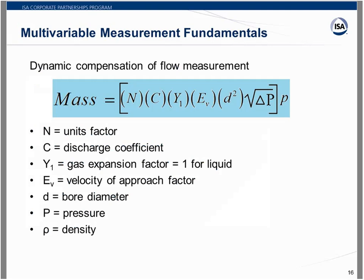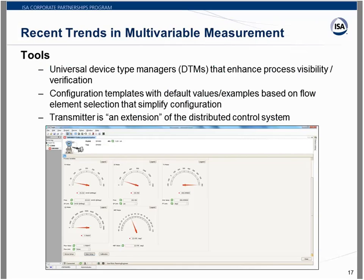Here is the new ANSI standard way of presenting the dynamic compensation formula for flow measurement. Mass flow equals N (engineering unit conversion, whether U.S. customary or SI units), times C (discharge coefficient), times Y (gas expansion factor — which drops out for liquid), times the velocity of approach factor, times bore diameter, times absolute pressure, times density. Inside the brackets we calculate volumetric flow rate, then multiply by density to get mass flow rate. I'll now turn it over to Mark to talk about recent trends in multivariable measurement.